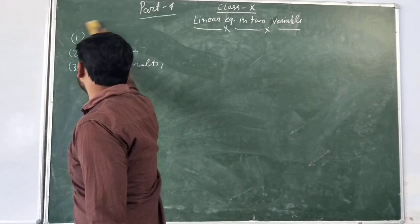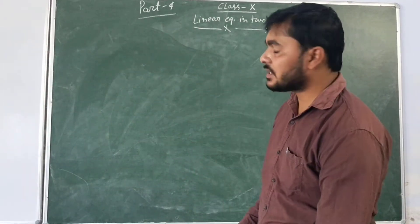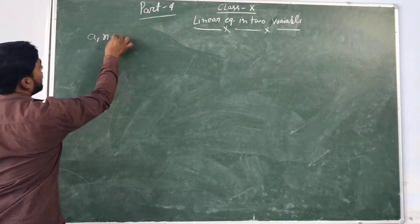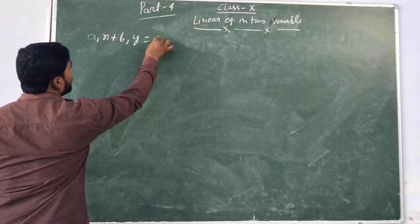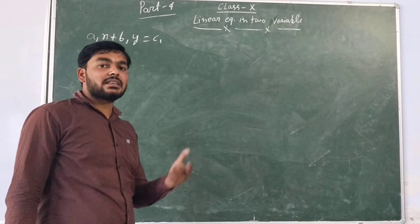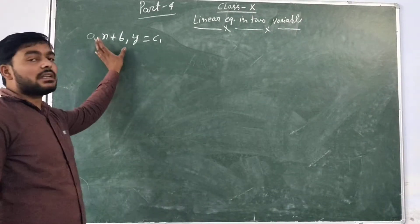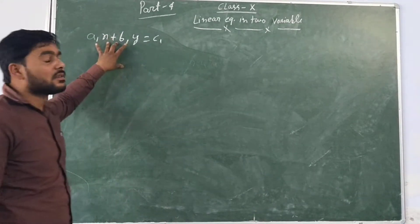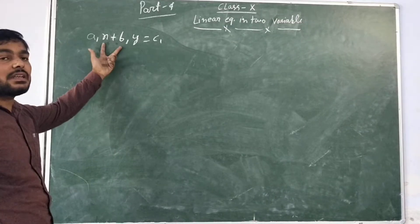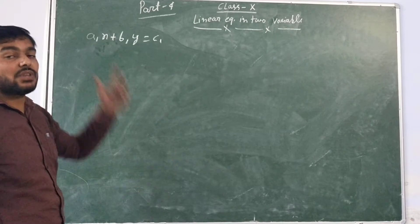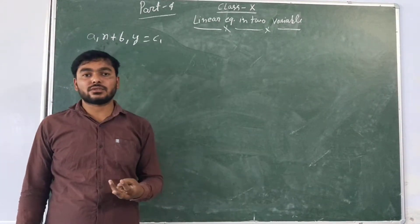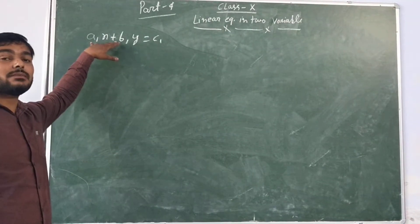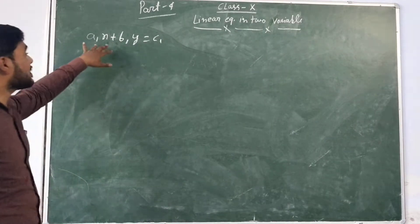First is the substitution method. The general form of a linear equation is A1x + B1y = C1. This is the first general linear equation. If two variables are present, you need two equations to find x and y. If you have three variables, you need three equations. Here we have two variables, so we need two equations.